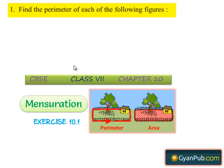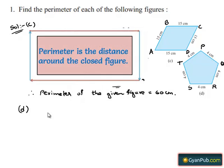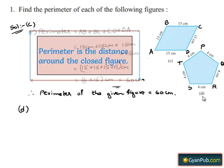Moving on to the first question in the first exercise — given to find the perimeter of each of the following figures. For figure D, let us denote the vertices with P, Q, R, S, and T. We have to find the perimeter of the given figure. We know that perimeter is the distance covered along the boundary forming a closed figure when you go around the figure once.